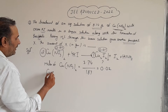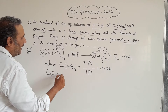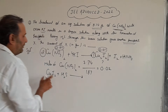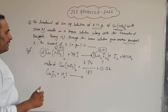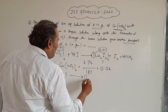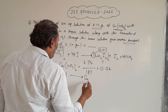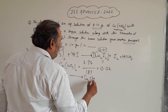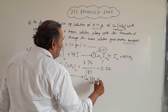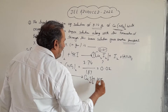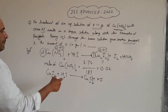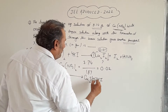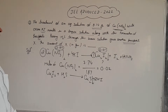Now this Cu₂I₂ will react with H₂S because we are passing H₂S gas through the solution. We will get Cu₂S — copper sulfide — which will precipitate out, as well as HI. We can balance this equation by putting a coefficient of 2 before HI.